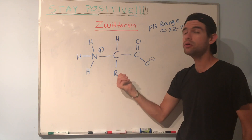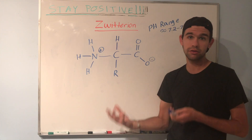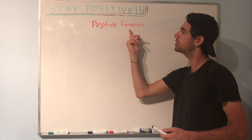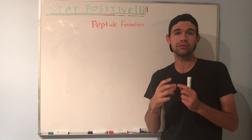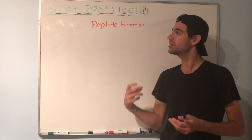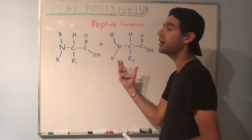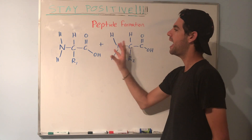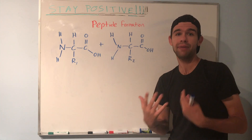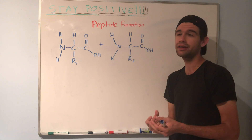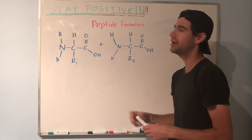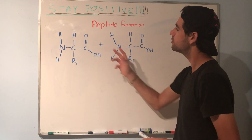It's also important to note that the R group too, depending on what it is, can be protonated or deprotonated at different pHs. The last concept I want to cover in this video is peptide formation. A peptide refers to two or more amino acids joined together by a type of bond we call a peptide bond. I've drawn two amino acids here, and I want to talk about how these two can bond together via a peptide bond to form a dipeptide. Three amino acids would be a tripeptide, etc. I didn't draw them in the zwitterionic form — that's just for simplicity.